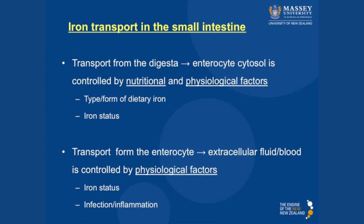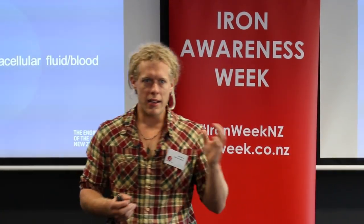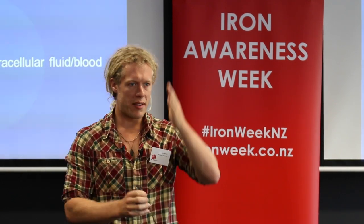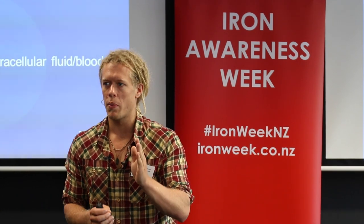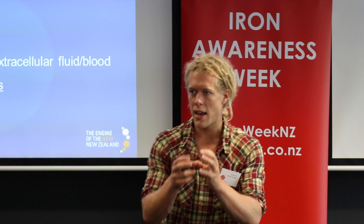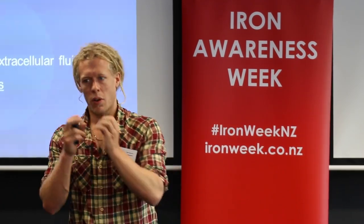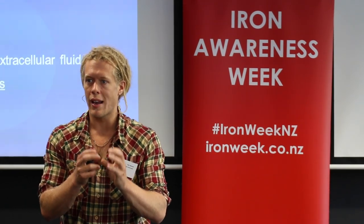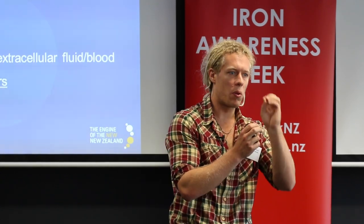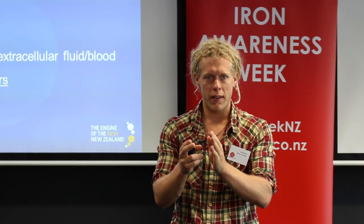Now I want to look at the actual process of absorption. For iron to be bioavailable — for iron to get from the digesta into the blood — it has to go across the absorptive enterocyte. Transport from the digesta into the cell's cytosol has to go across the apical membrane, and that apical membrane transport process can be influenced by physiological factors such as iron status, but also nutritional factors such as iron load or iron bioavailability. But iron going into the cell doesn't necessarily mean it's going to get from the cell into the blood. Movement of iron from the cytosol to the blood is mostly controlled by physiological factors, and there are not many nutritional factors that can upregulate iron transport from the cytosol to the blood.